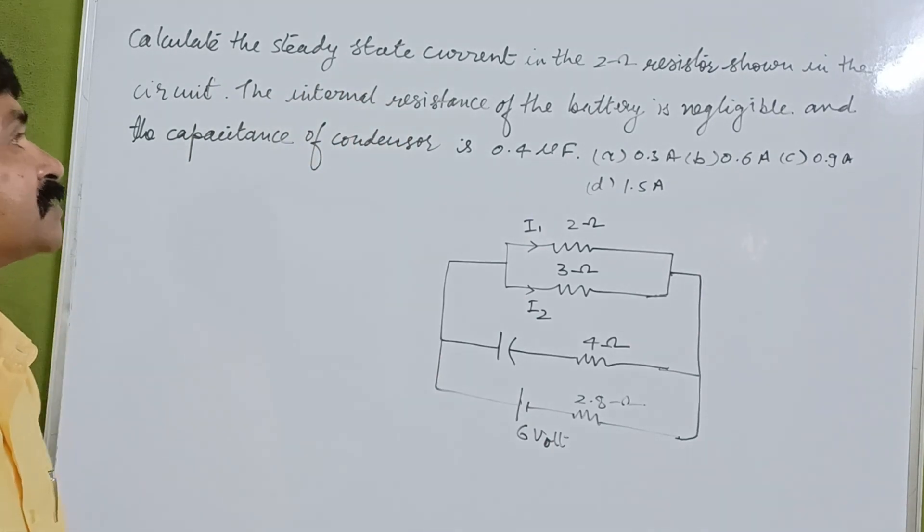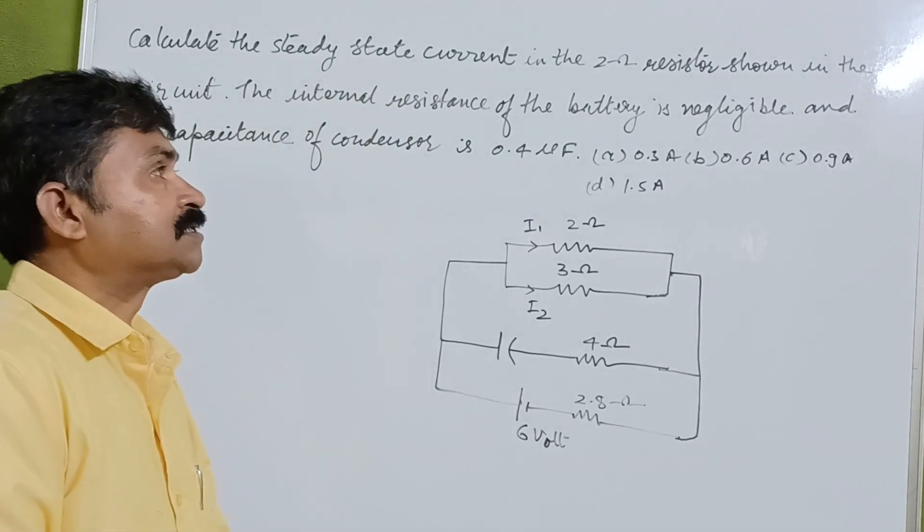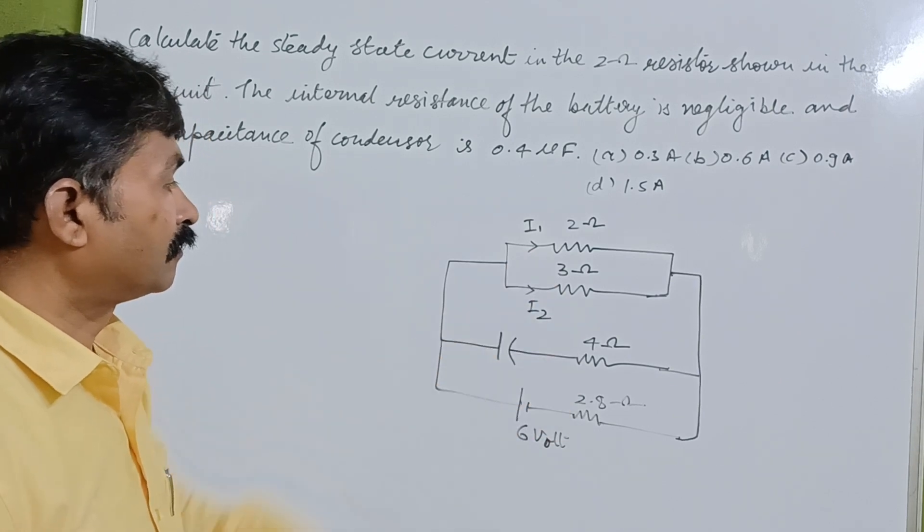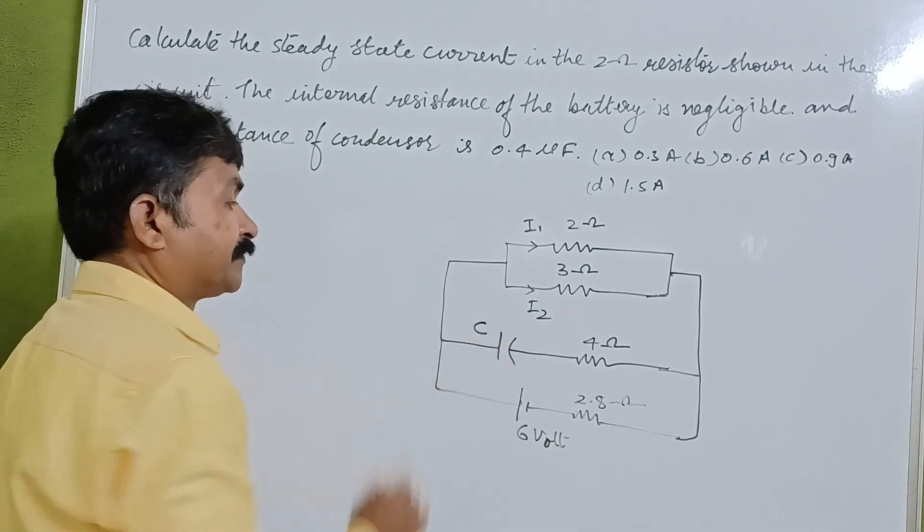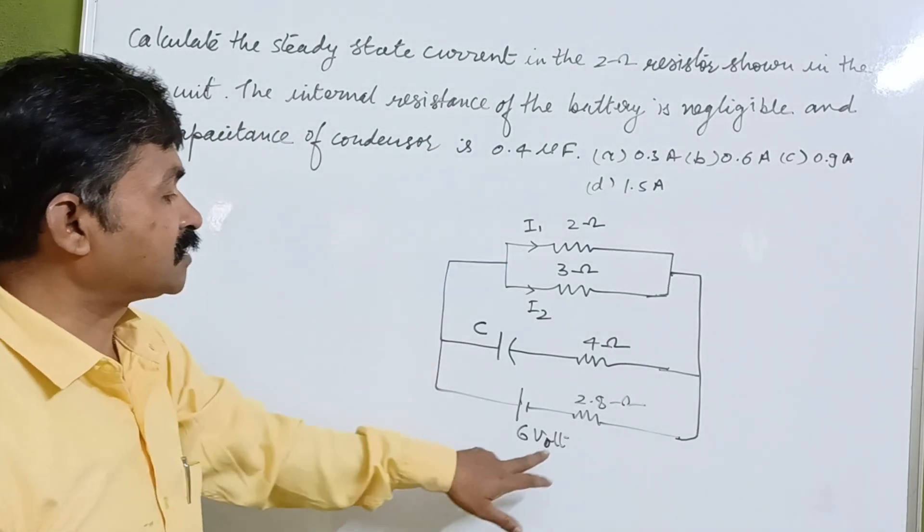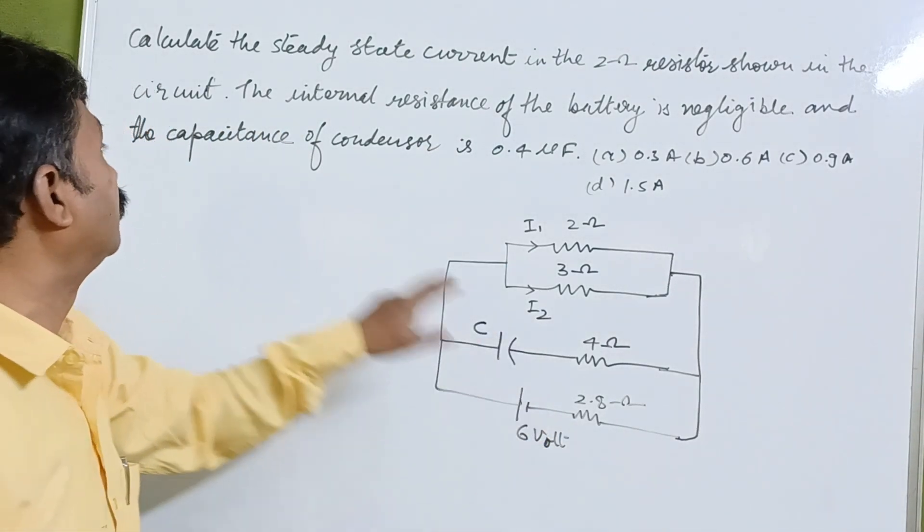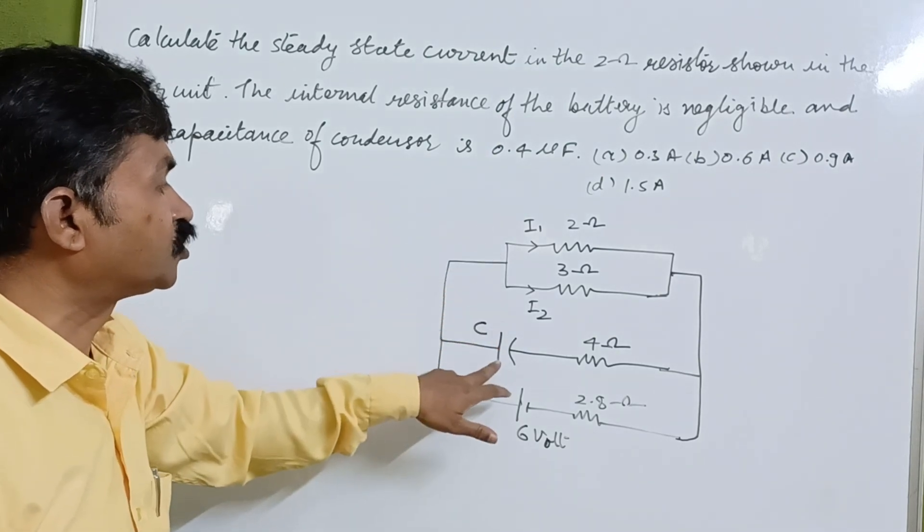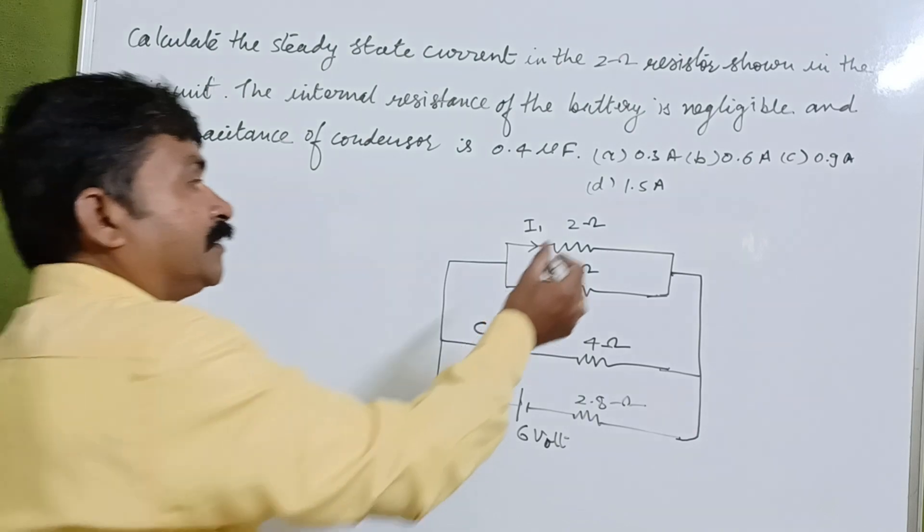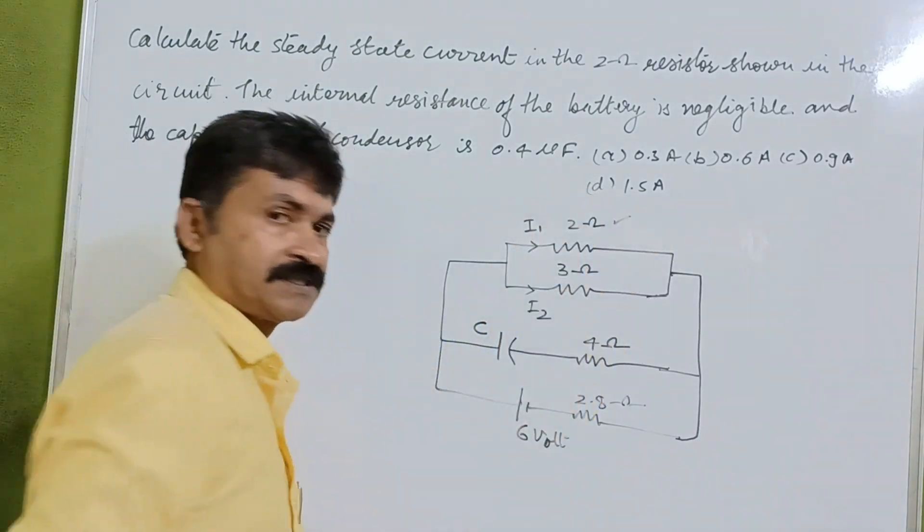Calculate the steady state current in the 2 ohm resistor shown in the circuit. The internal resistance of the battery is negligible and the capacitance of condenser is 0.4 microfarad. We have to determine the current in this 2 ohm resistor.